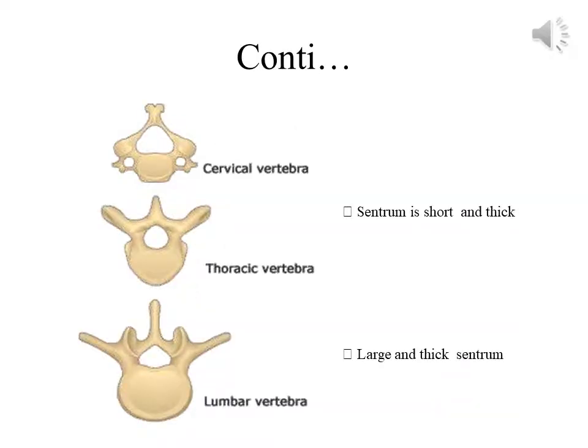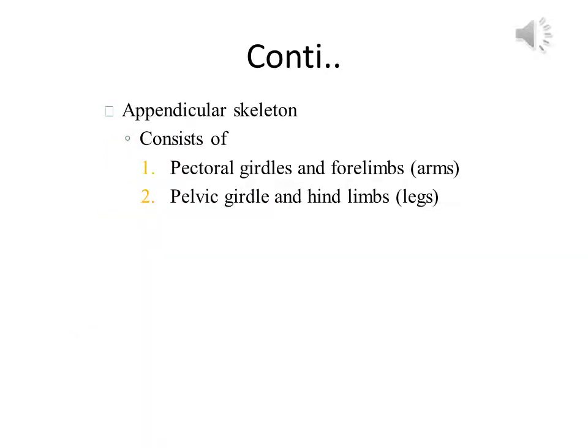These are three types of vertebrae: cervical vertebrae, thoracic vertebrae, and lumbar vertebrae. The basic movement is mostly carried out using the appendicular skeleton, which consists of the forelimbs and hindlimbs — the pectoral girdle with forelimbs, and the pelvic girdle with hindlimbs. Collectively these are known as the arms and legs, and they are the major structures used for movement and locomotion.